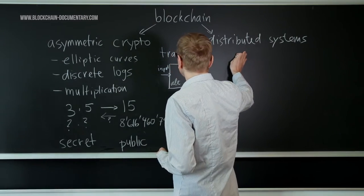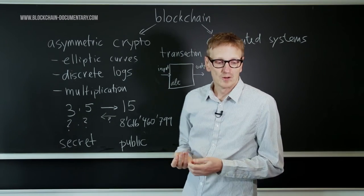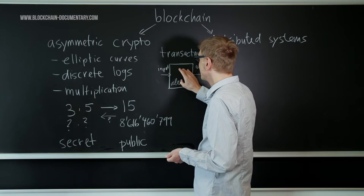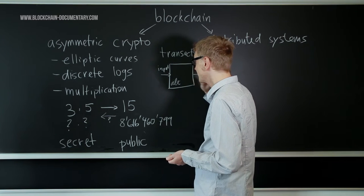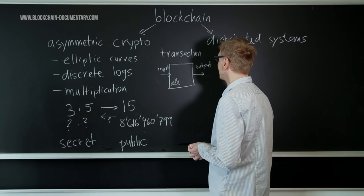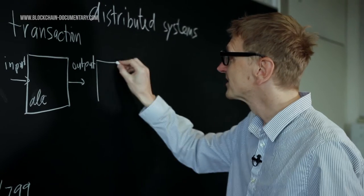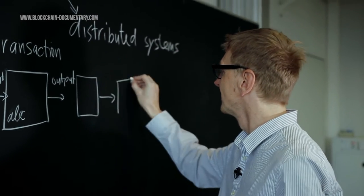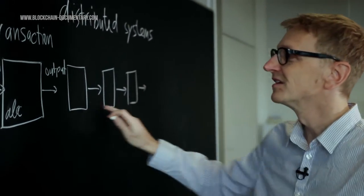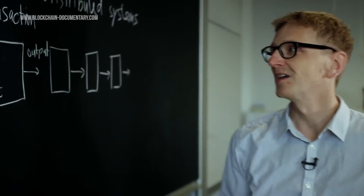The second part is about distributed systems. So what you also want to do is you want to know which of these transactions actually happened, which are actually, you know, should be in the system, and in what order are they in the system. So you want to order these transactions. You have now many of these transactions and you want to say which one was before the other transaction.